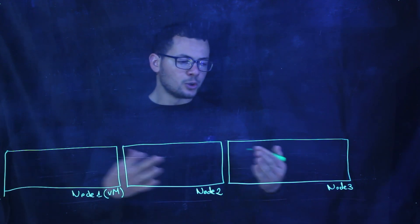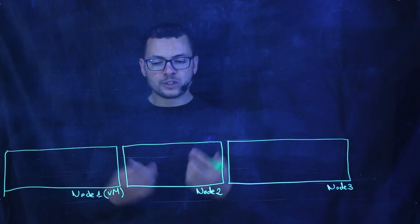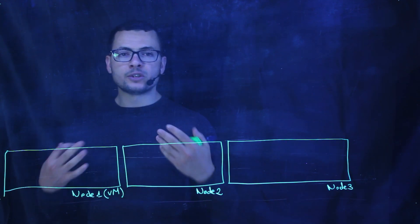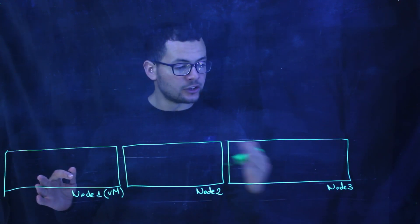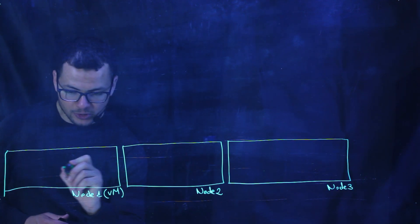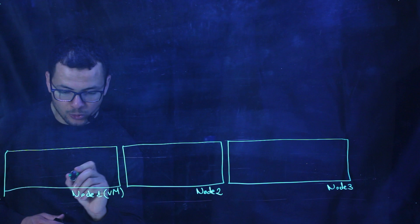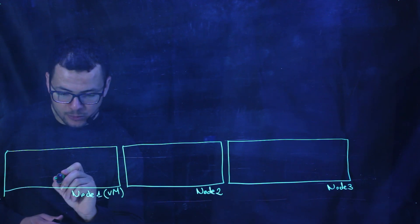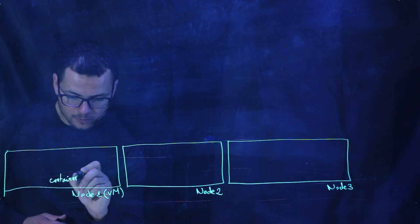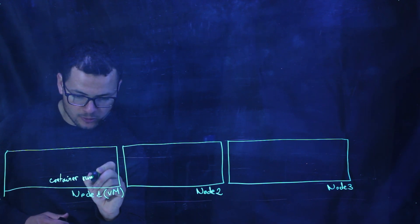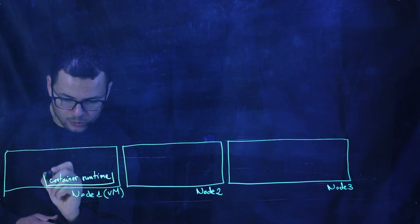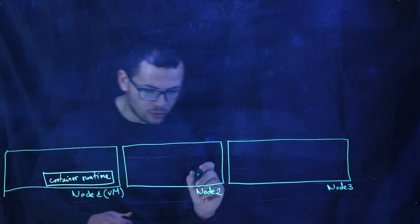In each of those nodes, we want to run the containers. For Docker containers, for example, we need to have the container runtime installed in each of those nodes. So one of the components that should be available is the container runtime. This should be installed in all the nodes.